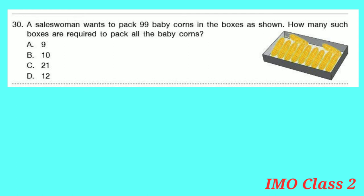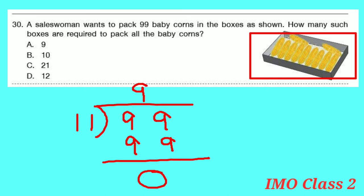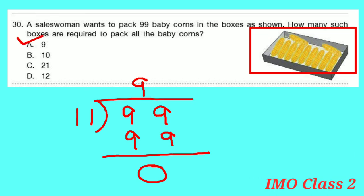Question number 30: A saleswoman wants to pack 99 baby corns in boxes. Each box holds 11 baby corns. How many boxes are required? 99 ÷ 11 = 9. Option A is correct — 9 boxes are required.